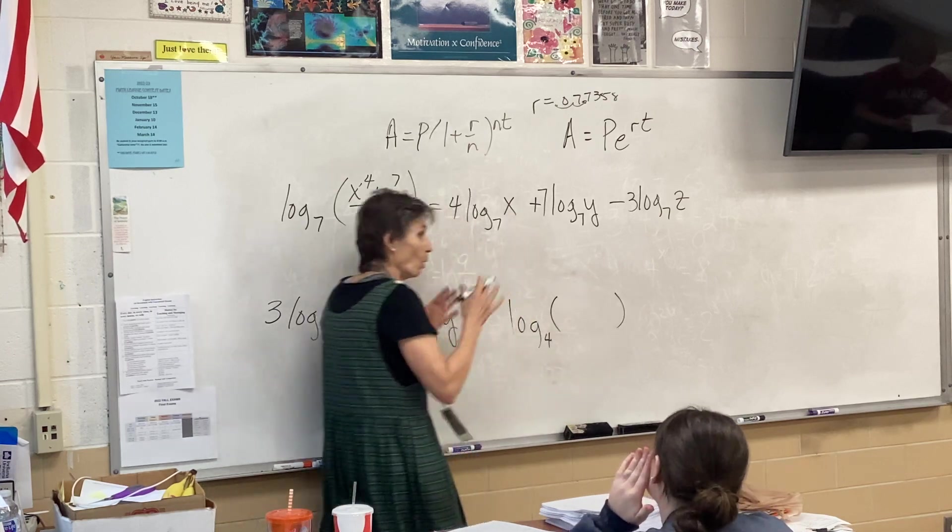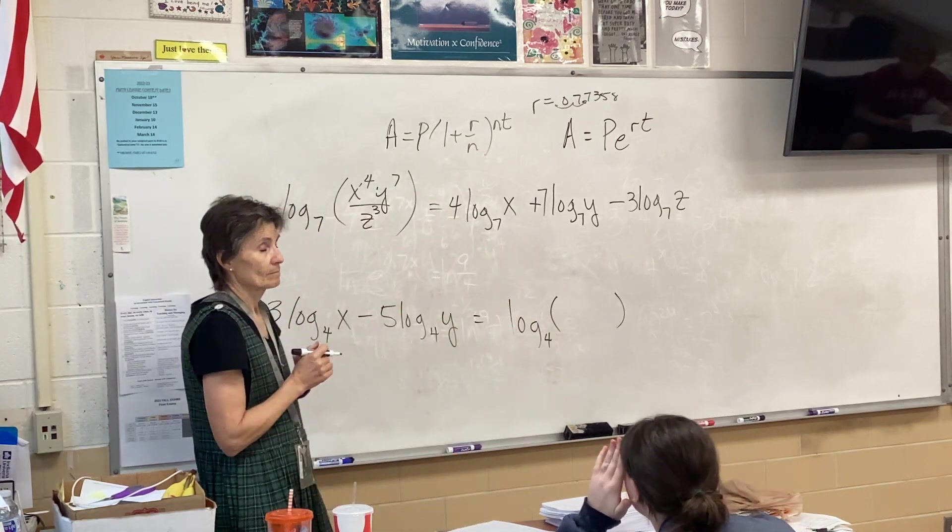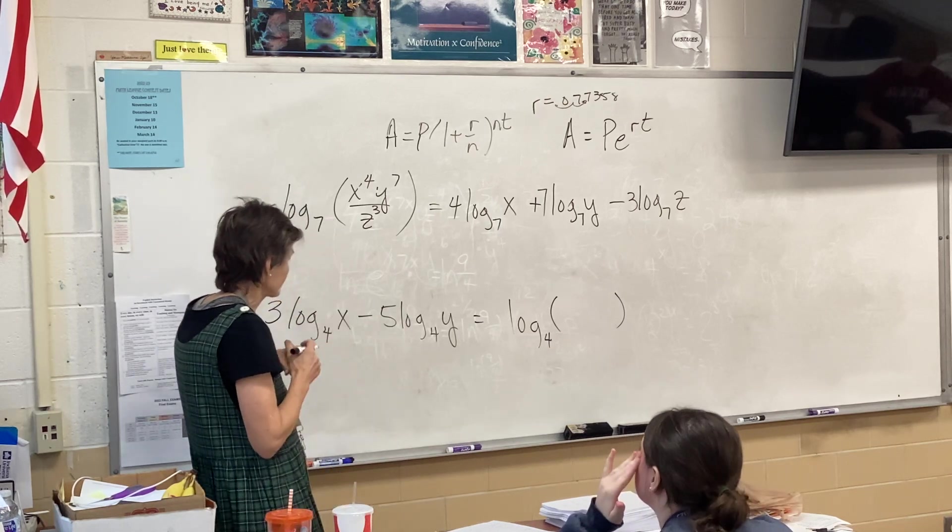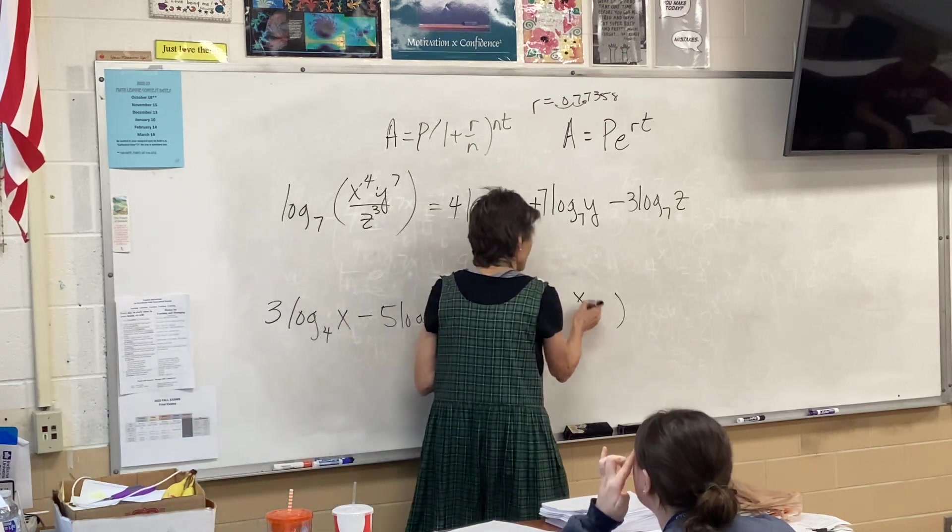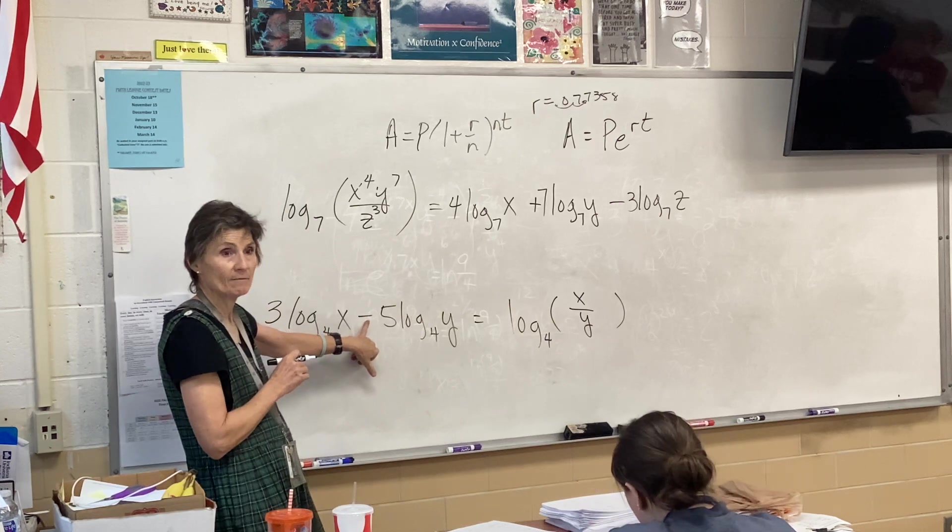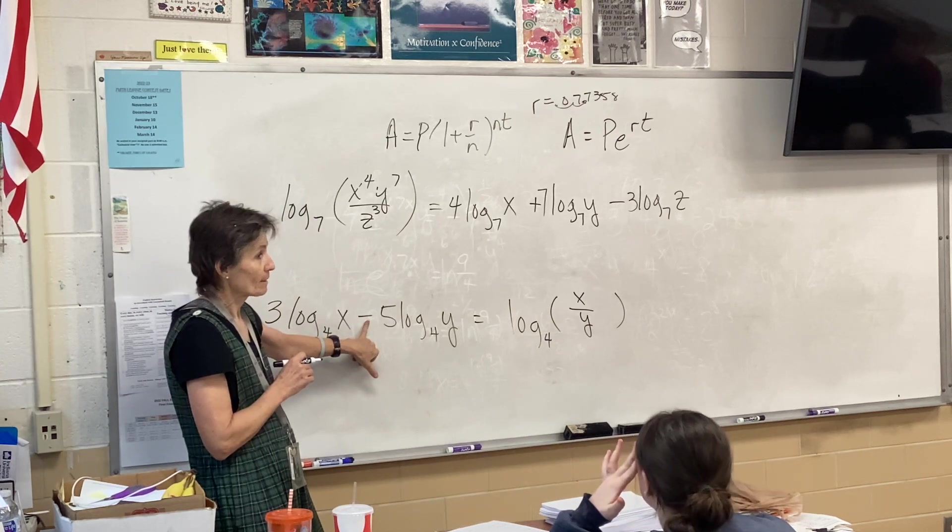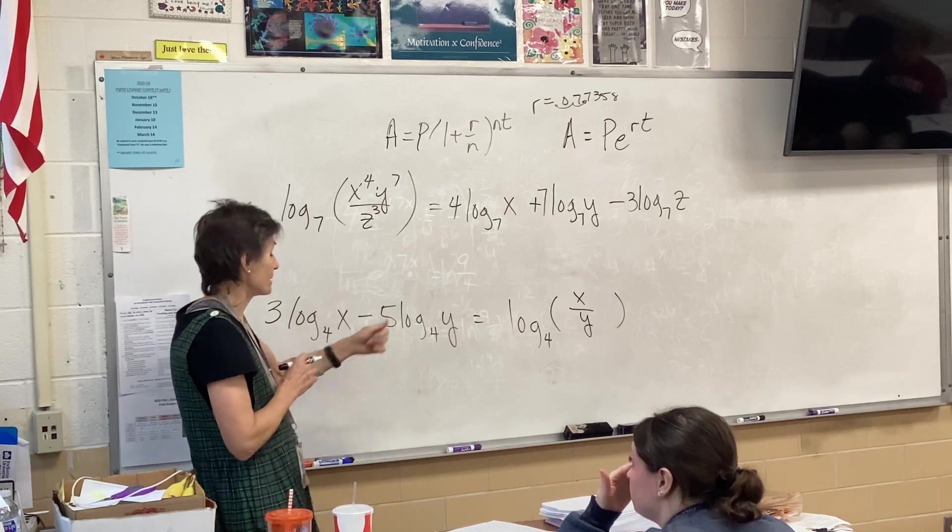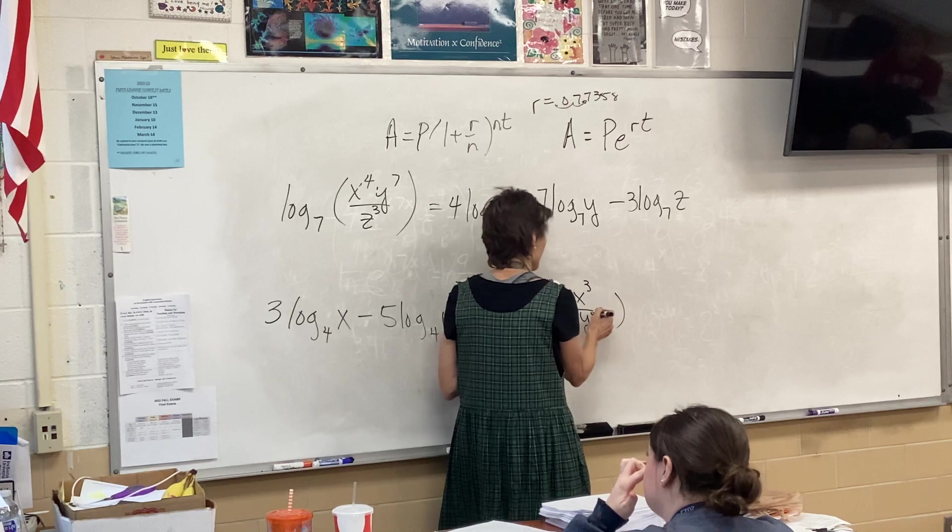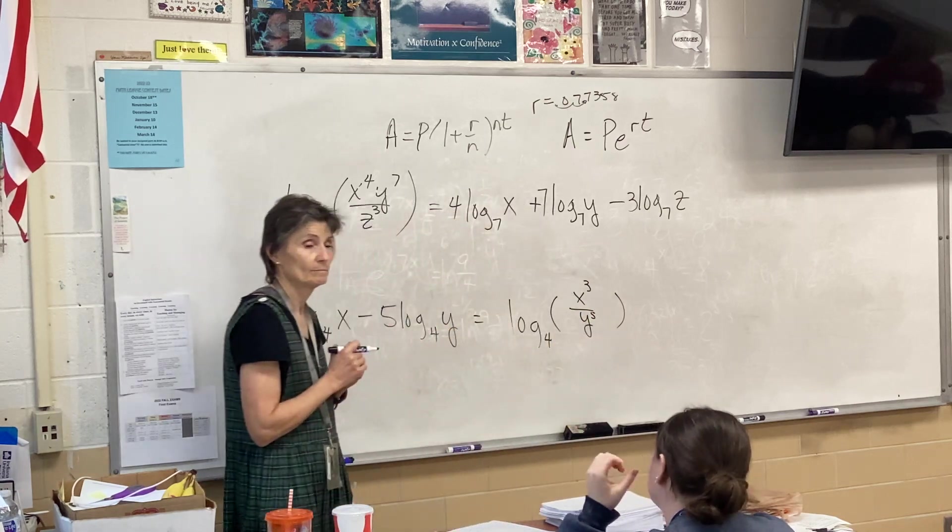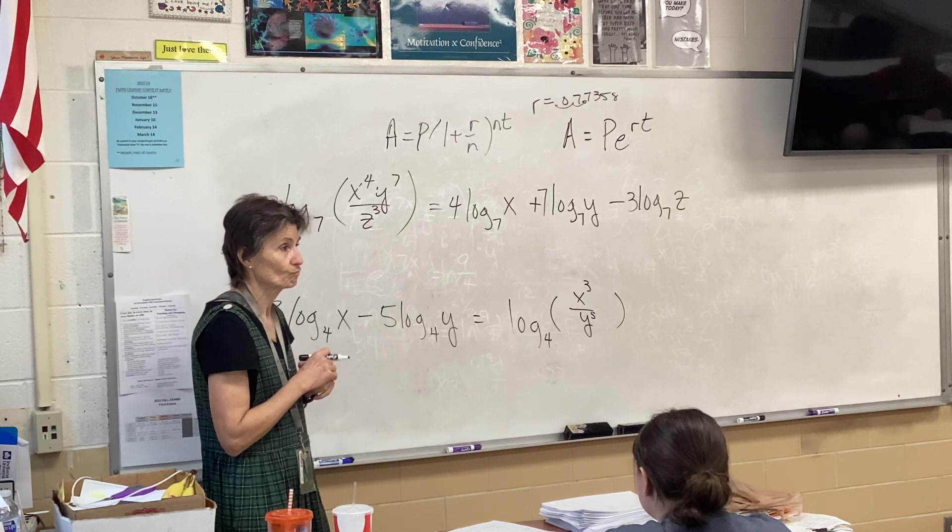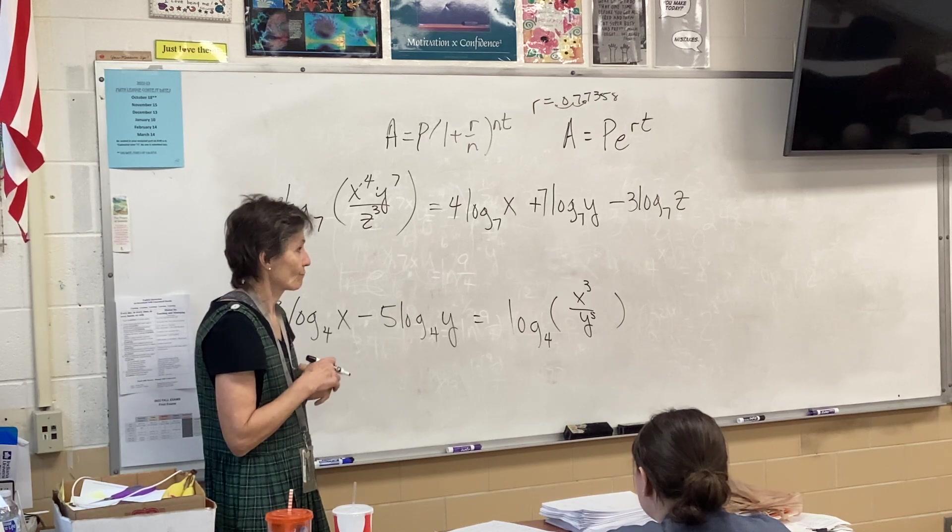This is the opposite. If you're putting this back together, you're going to have one logarithm. Well, what's going to go in that parentheses here? You're going to have an x over y because it's clearly a division problem because of the minus. And then what do I do with a 3 and a 5? Exponents. They become exponents. x cubed, y to the fifth. Pretty easy. Okay, what else?